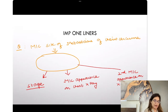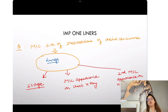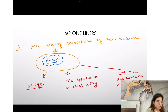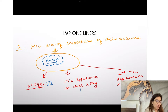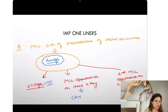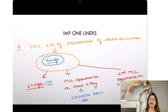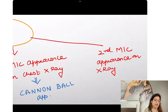Some important one-liners: the most common site of metastasis of choreocarcinoma is the lungs. Whenever metastasis happens in lungs, that is stage 3 choreocarcinoma. The most common appearance on chest X-ray is cannonball appearance, and the second most common is snowstorm appearance.